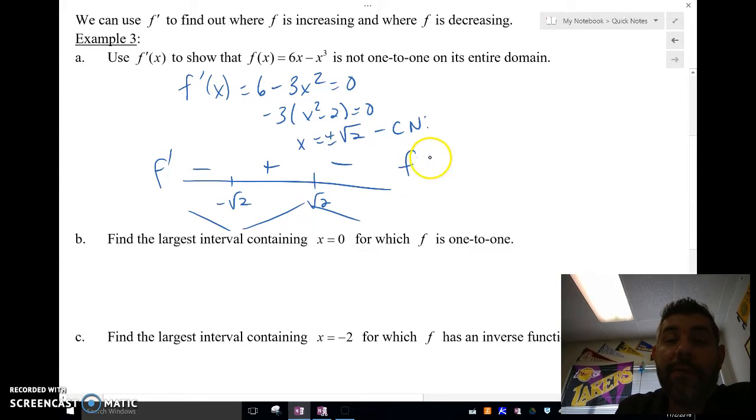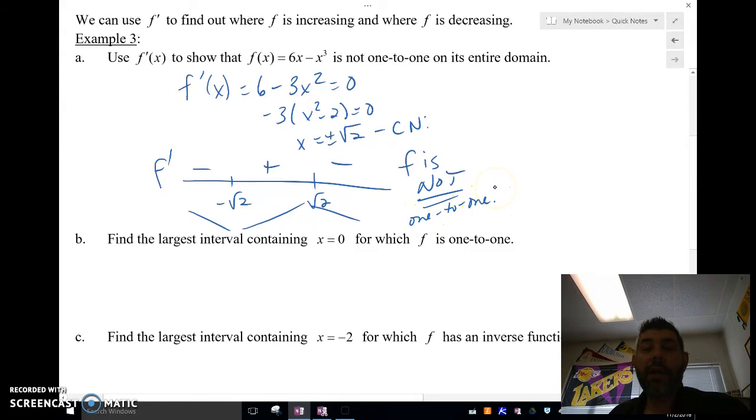It would have to always increase. So we just say by this, f is not one-to-one. Pretty simple. We're just trying to show that the derivative doesn't always increase or always decrease. So let's take a look at the next one.